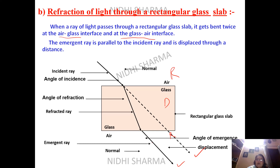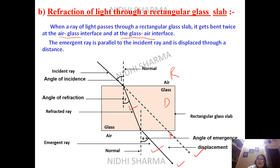The second refraction ray is called the emergent ray. So the first refracted ray inside the glass is called the refracted ray, and the ray coming out is the emergent ray. If you make a normal, the angle of incidence is larger than the angle of refraction. We then have the angle of emergence. Practically, angle I is always equal to angle E, and the emergent ray is always parallel to the incident ray with a lateral displacement.